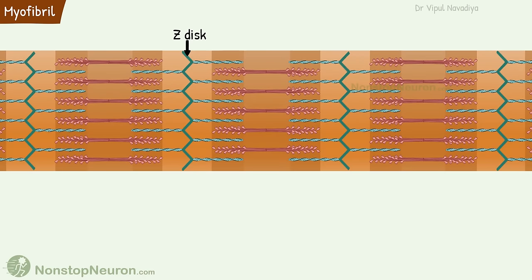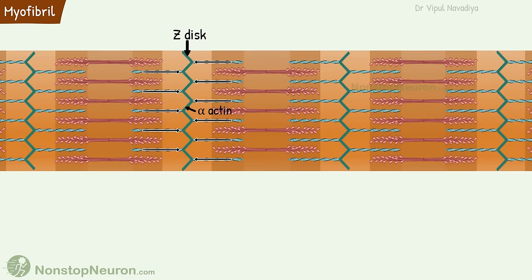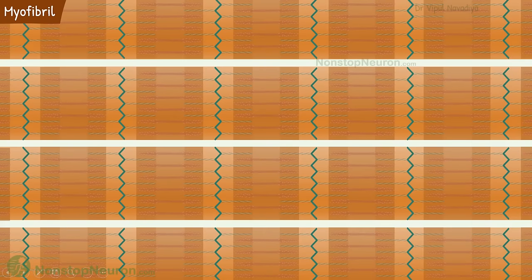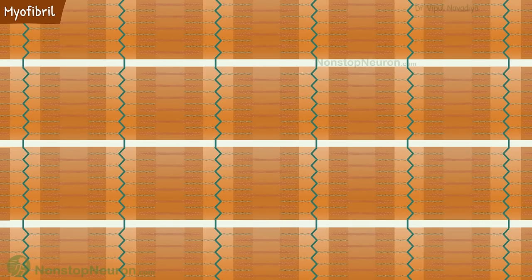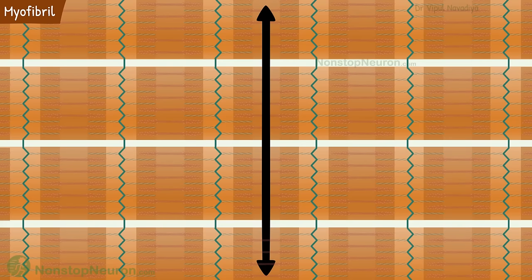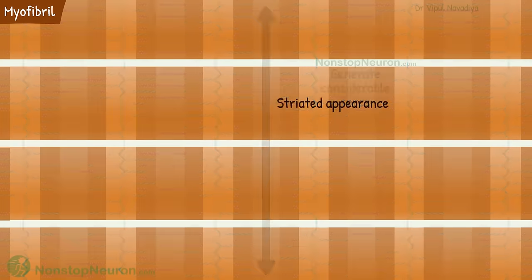Next we want to learn about Z-discs. Here we have alpha-actin proteins. The Z-disc cross-links thin filaments from adjacent sarcomeres, thus tethering thin filaments of a myofibril together. Z-discs of adjacent myofibrils are also connected, which connects neighboring myofibrils and aligns their sarcomeres in one plane. This highly organized structure allows skeletal muscles to generate considerable mechanical force.